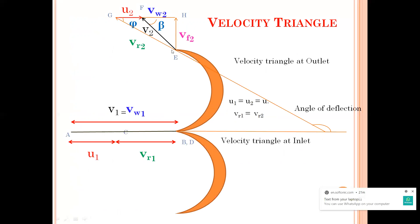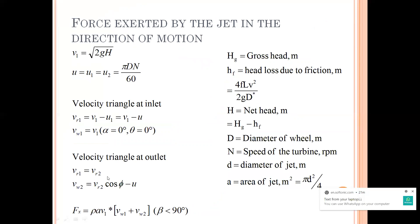For vw2, I can calculate vr1 = v1 minus u, and I know that vr1 is equal to vr2. So if I want to know vw2 I can write vr2 * cos(phi) minus u2, giving me vw2. The buckets are smooth — there is no shock — so vr1 is equal to vr2. Then I can write vw2 = vr2 * cos(phi) minus u. I will be substituting these in the equations further, and Fx = rho * A * v1 * (vw1 + vw2).